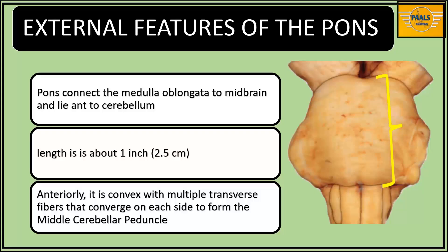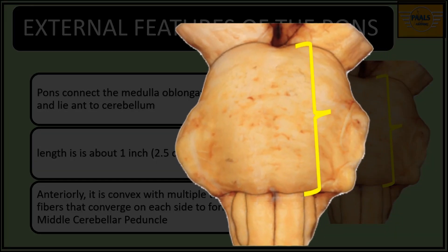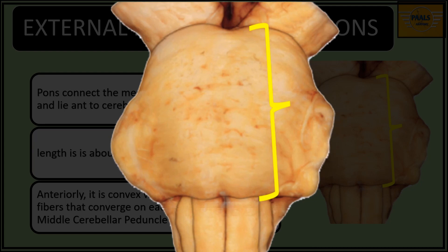The pons is the part of the brainstem that connects the medulla oblongata to the midbrain, and it lies anterior to the cerebellum. The length is about 2.5 cm, and its anterior surface is convex.